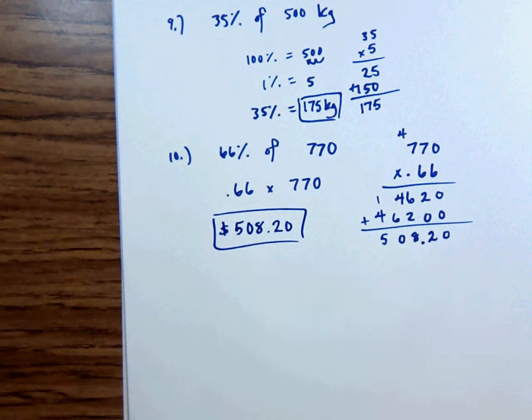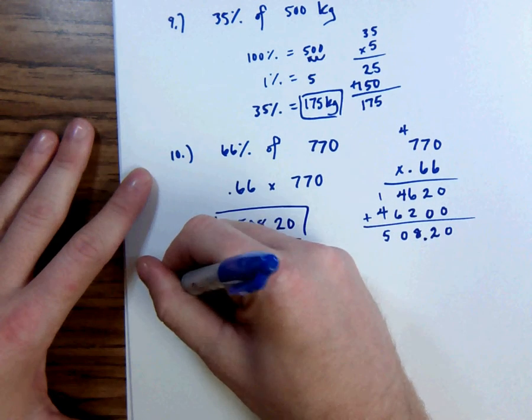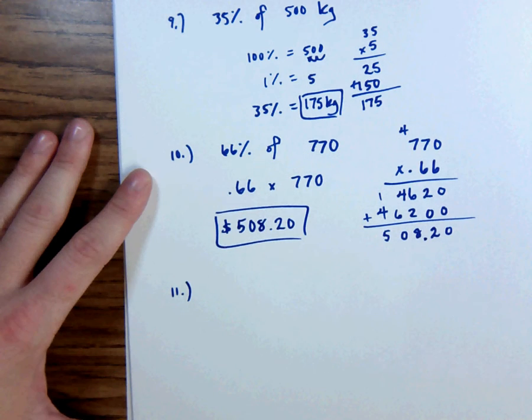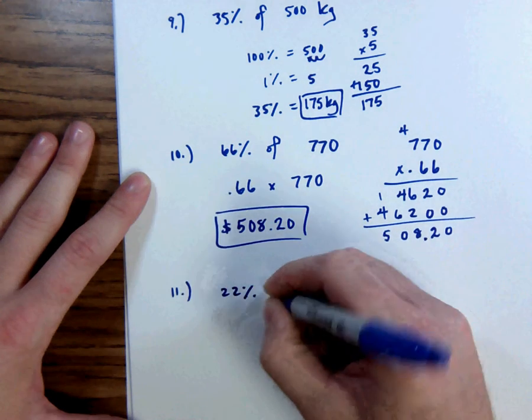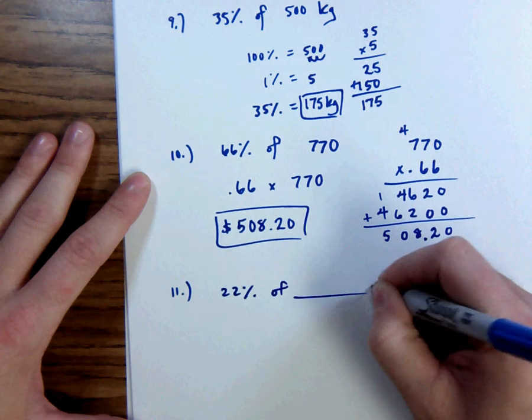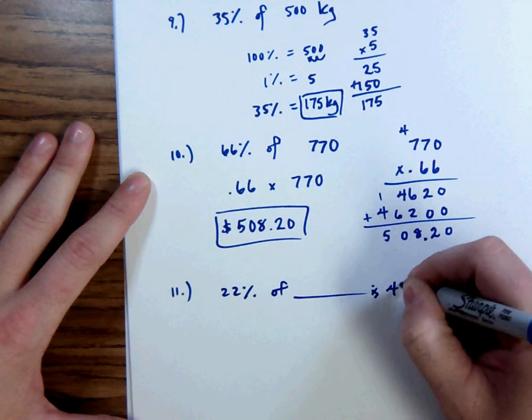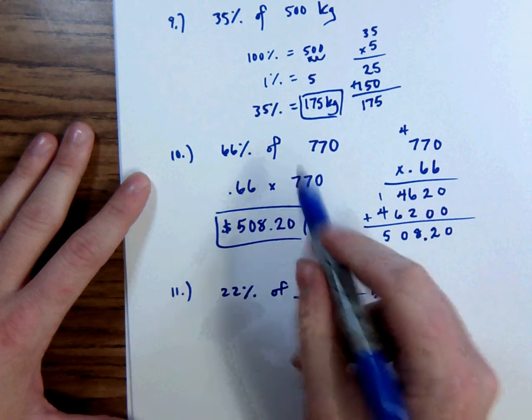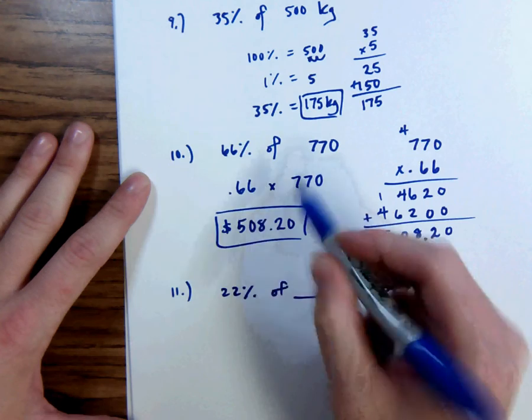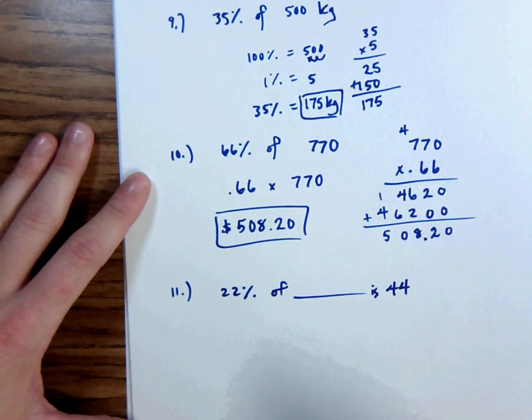Cool. Two more for this video. We got number 11. 11 from the review says 22% of what is 44. Okay. We can do this. I said dollars. That's not dollars. I just noticed that. Yeah, it's dollars. It's dollars in the question. Nevermind.